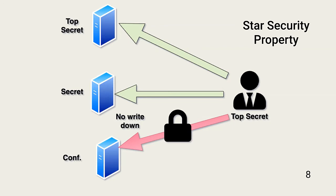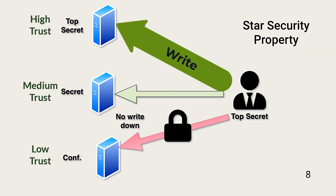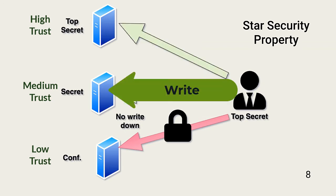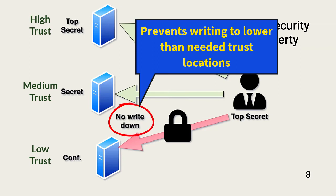The star security property complements the simple security property. It prevents a subject with access to sensitive information from writing that information to a location with less protection. In this example, the subject has a top-secret security level, allowing him to access highly sensitive information for which he has a need to know. However, when implemented, the star security property prevents him from writing top-secret or secret information to a location only trusted for confidential information. The same protection applies if he tries to write top-secret information to a secret resource.